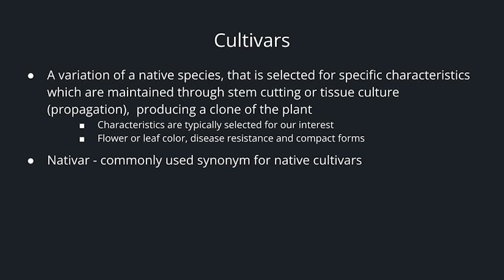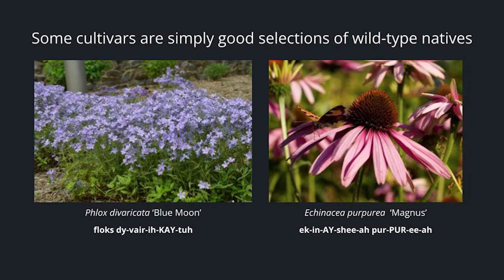Characteristics are typically selected for our interest — they include flower or leaf color, sometimes disease resistance, and also compact forms. You may also come across the term nativar, a common synonym for native cultivars. Some cultivars are simply good selections of wild-type species. Here we have Phlox divaricata Blue Moon and Echinacea purpurea Magnus — both are genetically very similar to the wild species, selected because they have good growth genetics and prolific flowering.